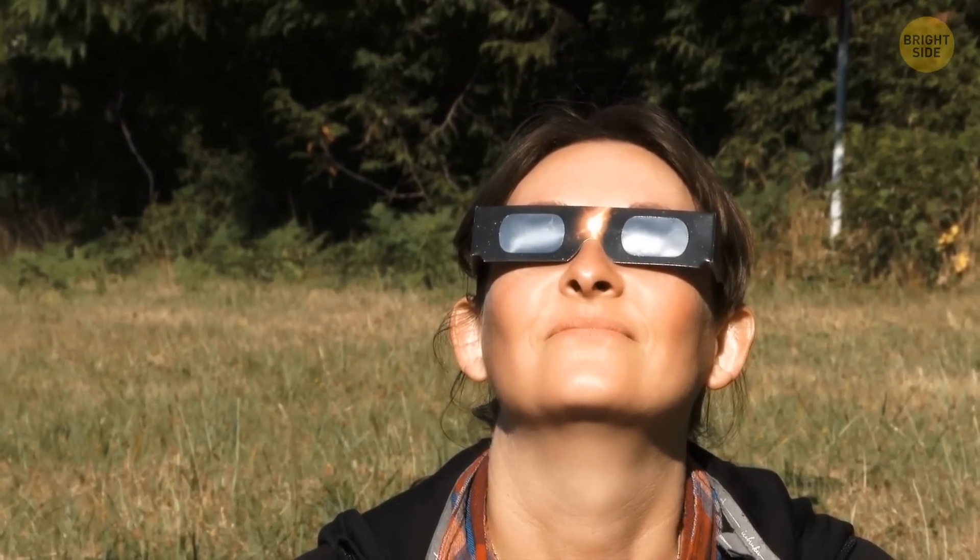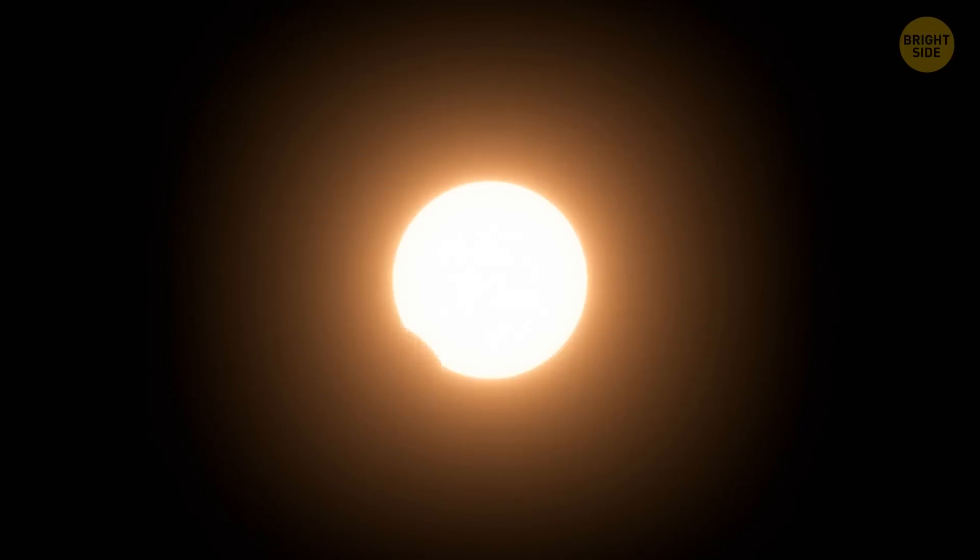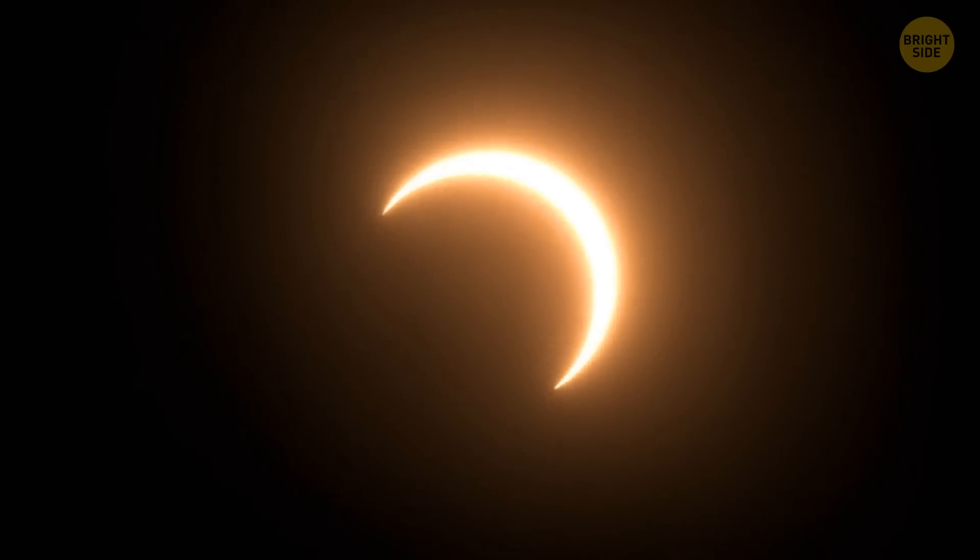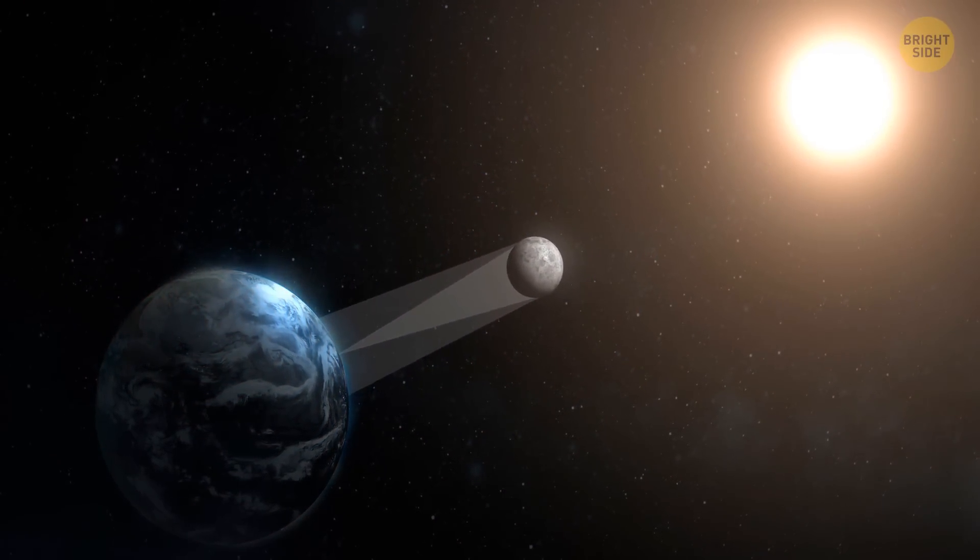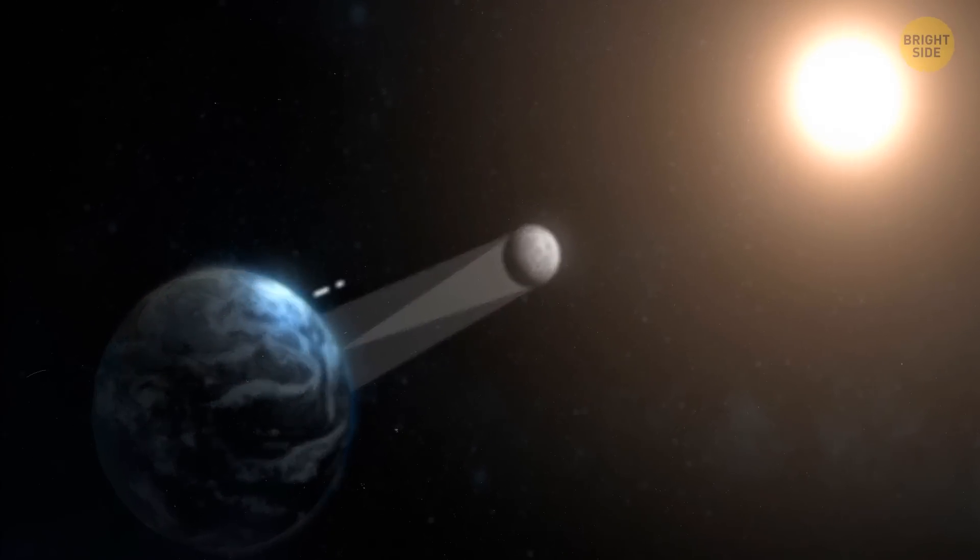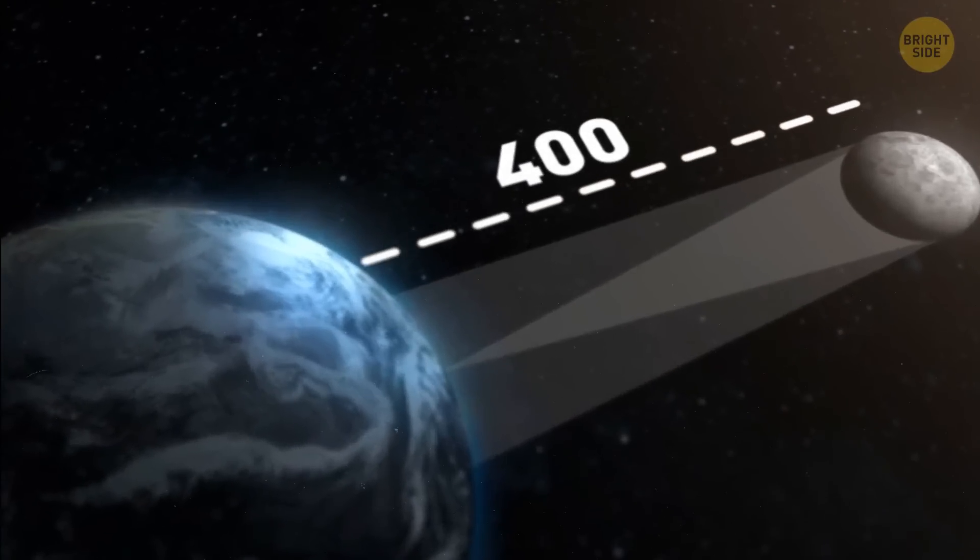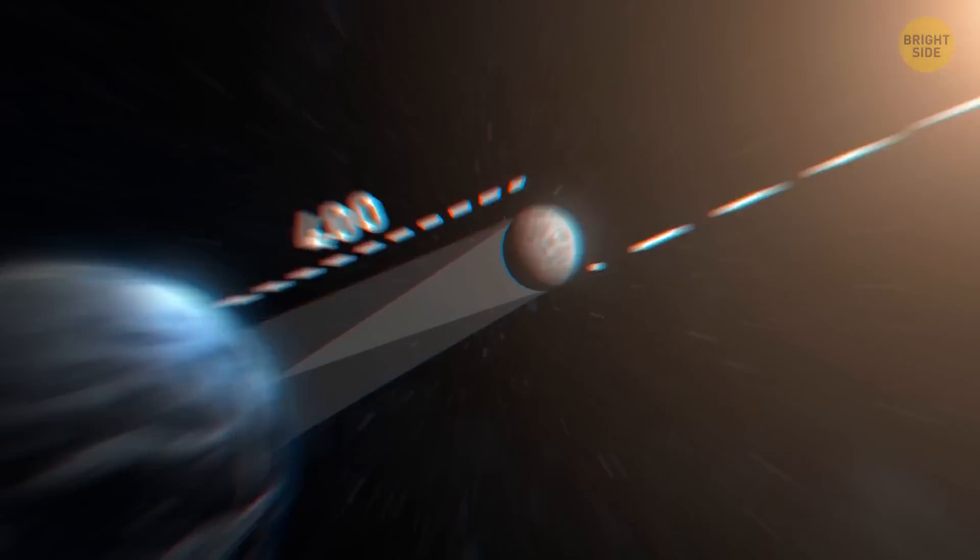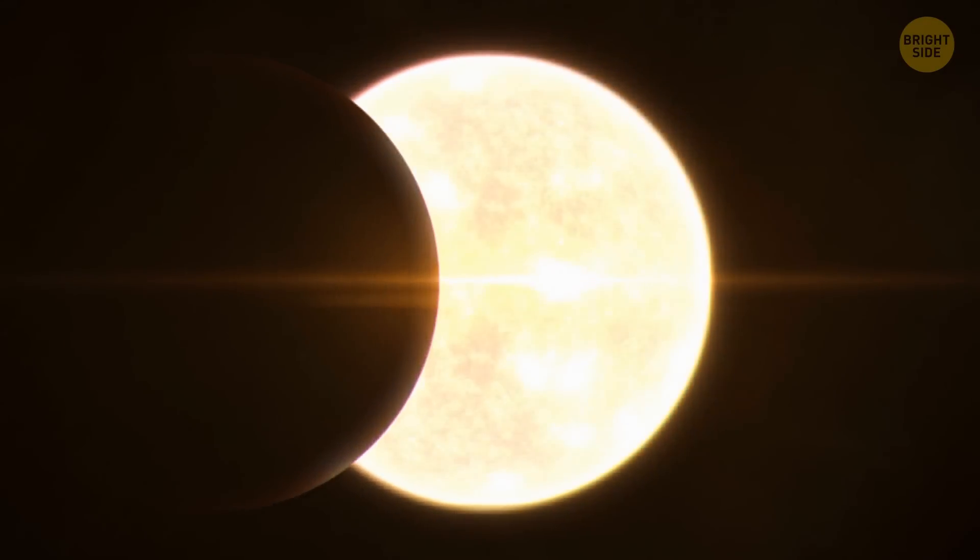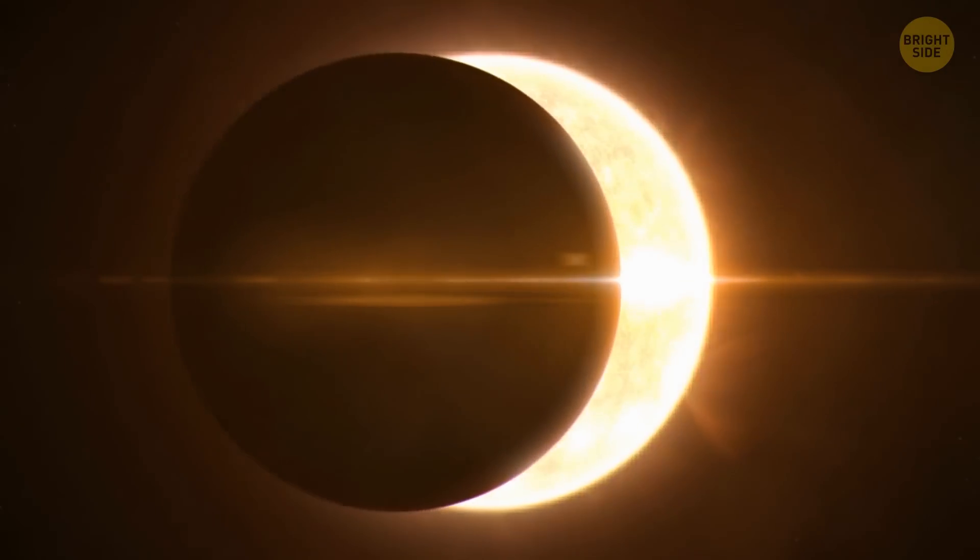Solar eclipses are amazing to witness because the moon and the sun seem to overlap perfectly in our sky, even though the sun is way bigger, about 400 times. The trick is the moon is also about 400 times closer to our planet, so they end up looking the same size to us. Sadly, at some point during our planet's history, solar eclipses won't happen anymore.